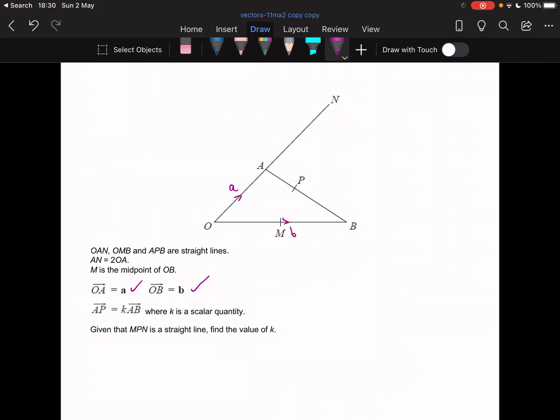Because it tells me AN is 2OA. So OA is a, 2OA is 2a. So that bit can be 2a. It says that AP equals kAB, where k is a scalar quantity. Given that MPN is a straight line, find the value of k.